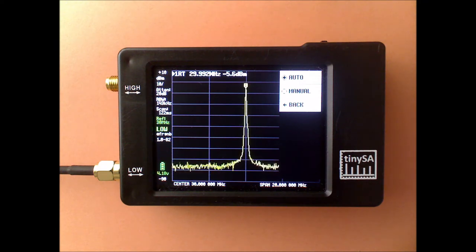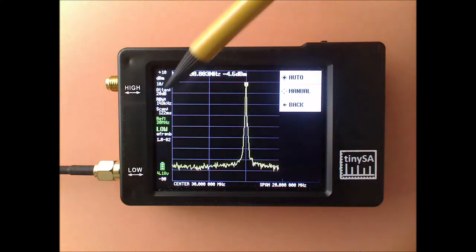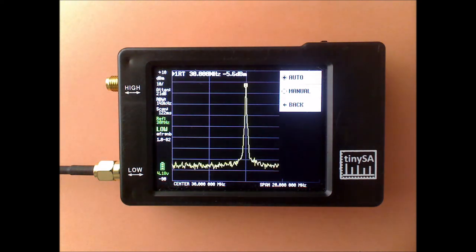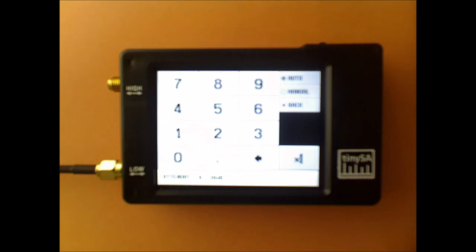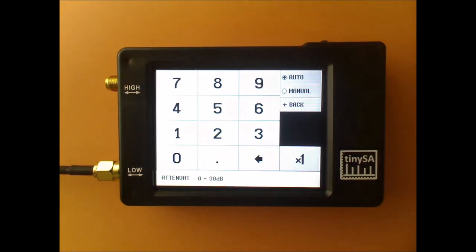The current attenuation is automatically set to 20 dB as you can see here at the right. And I'm going to demonstrate what happens if you override this and what you get.